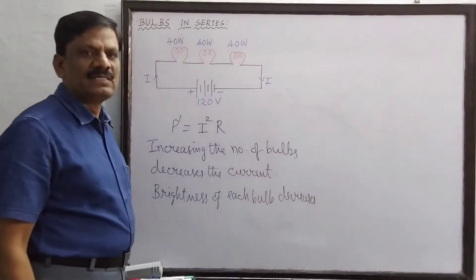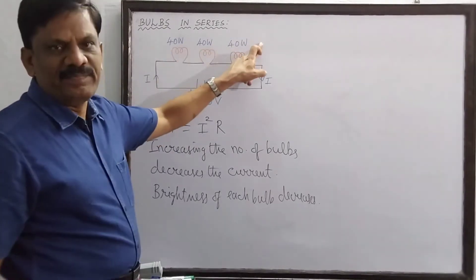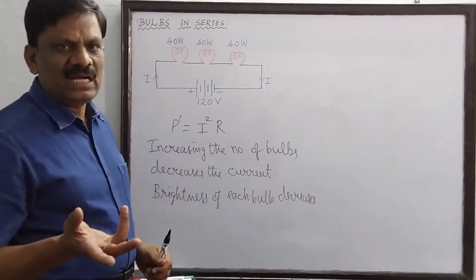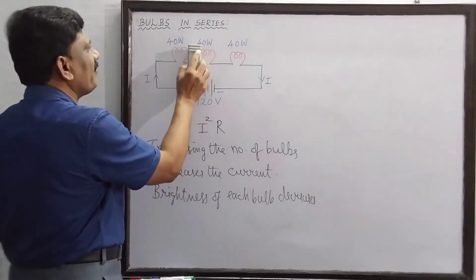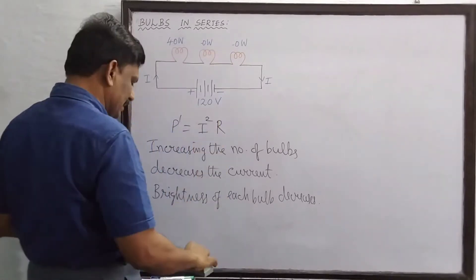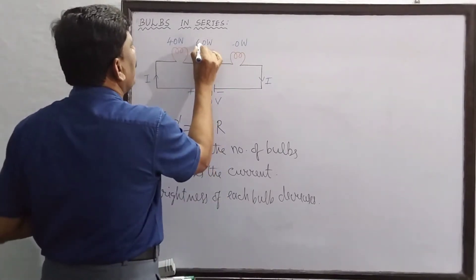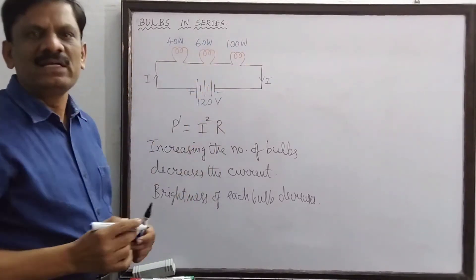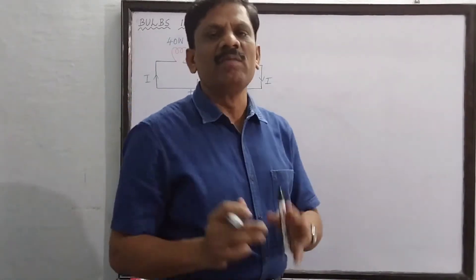Now we have considered three identical bulbs with the same power. Suppose their powers are different — the first is a 40-watt bulb, the second is a 60-watt bulb, and the third is a 100-watt bulb. Their powers are different, so in such a case, which bulb is going to glow most brightly?